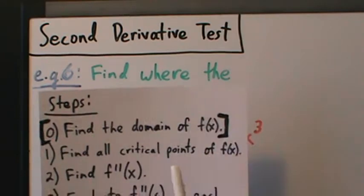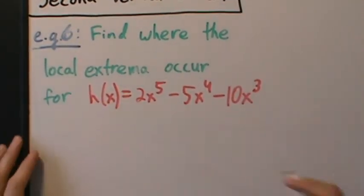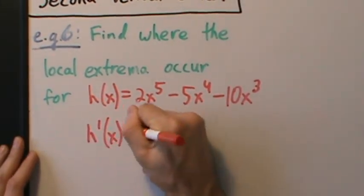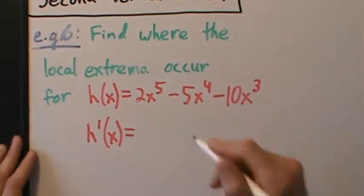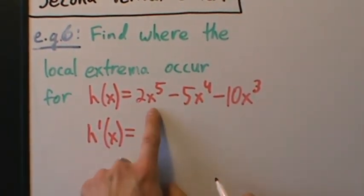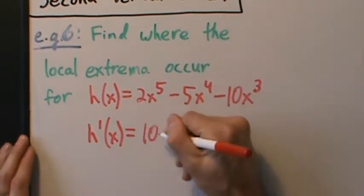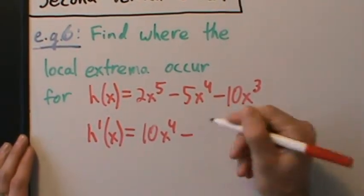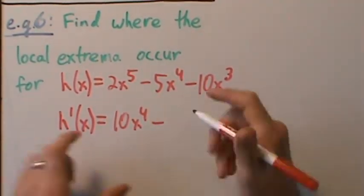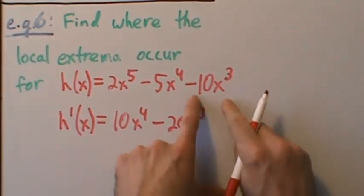Now we just want to find all the critical points of the function. Take the derivative and set it equal to zero, and find out where the derivative is undefined. The derivative won't be undefined here since we're dealing with polynomials. So the derivative is 10x to the fourth minus 20x cubed minus 30x squared.